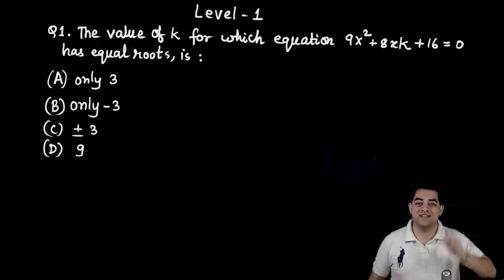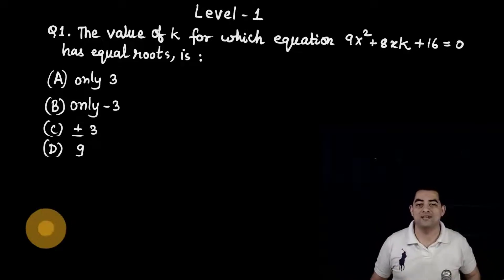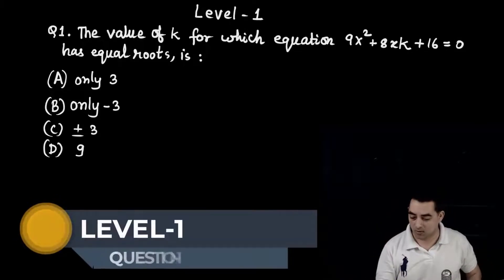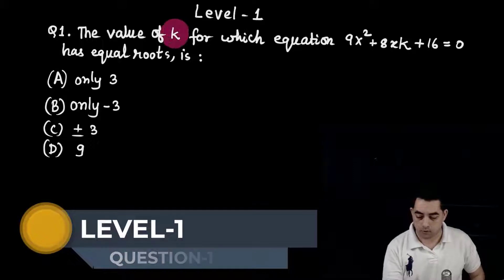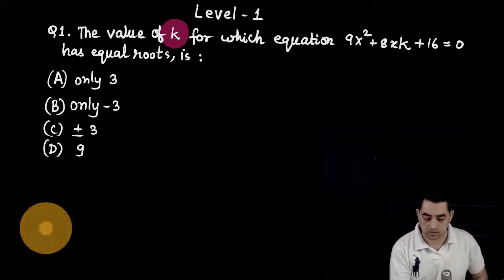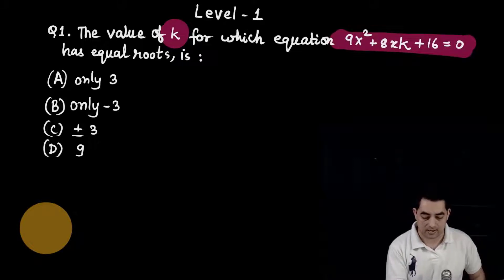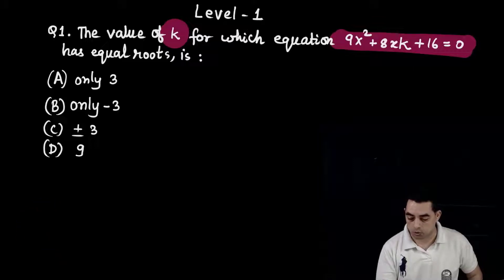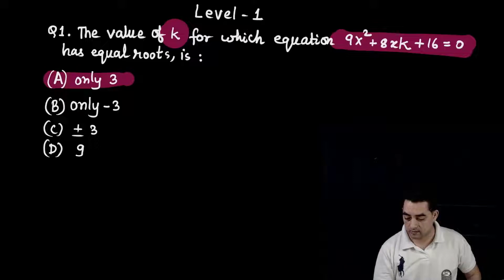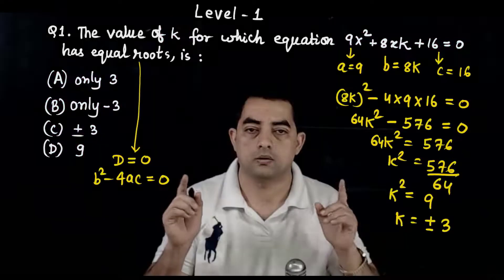Hello students! Level 1, question number 1: the value of k for which the equation 9x² + 8xk + 16 = 0 has equal roots is — your 4 options are: only 3, only minus 3, plus minus 3, or 9.